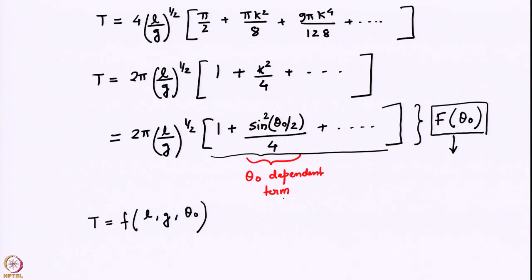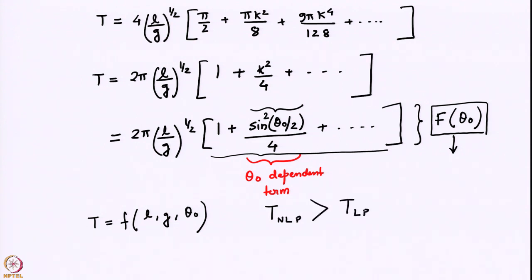With this theta_0 dependent term, we can understand that since the correction term is positive — it is sin squared of theta_0 over 2 — the time period of a nonlinear oscillator or nonlinear pendulum is actually greater than the time period of a linear pendulum. The inverse would hold true for frequency.